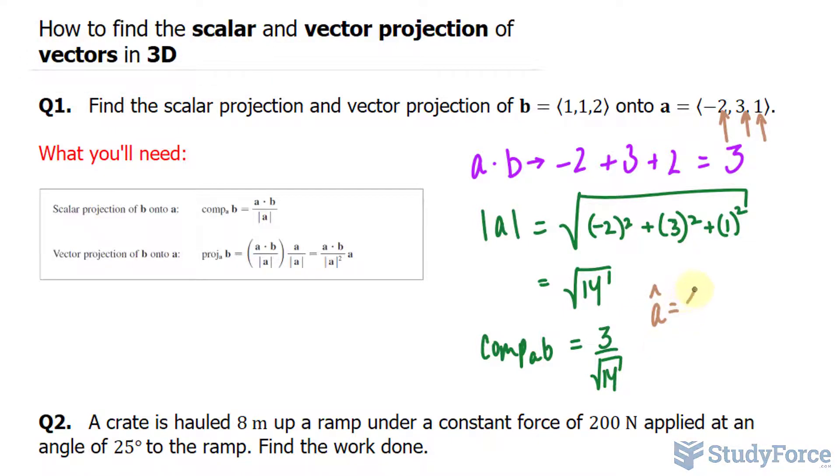So we have A hat, where the unit vector is negative 2 over the square root of 14, 3 over the square root of 14, and 1 over the square root of 14. And we'll take this unit vector and multiply it to the scalar projection. I'll show my work over here.